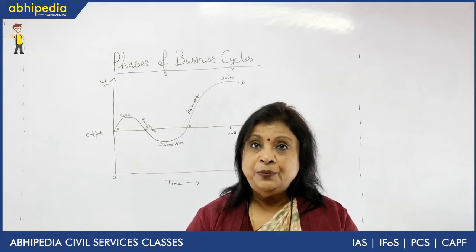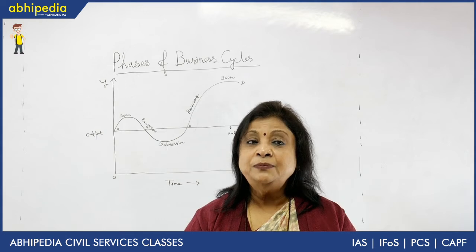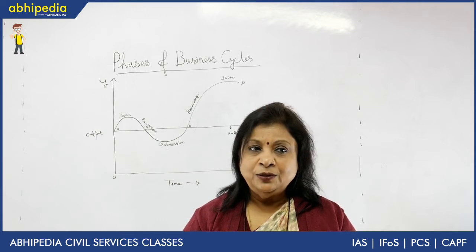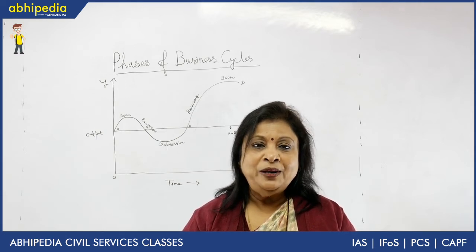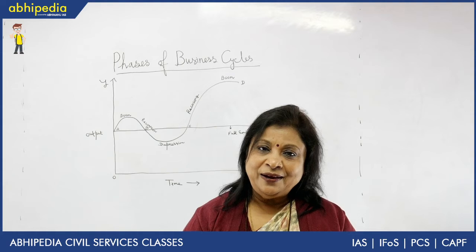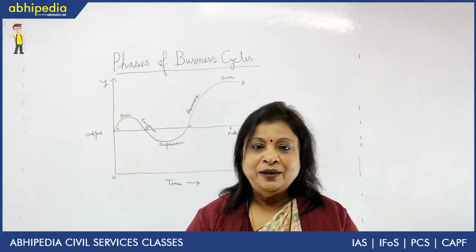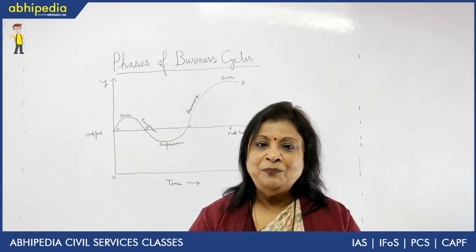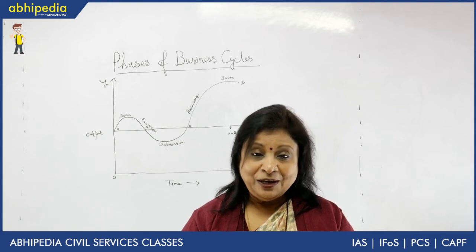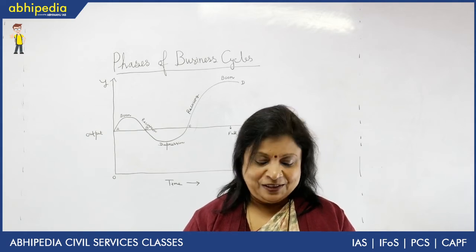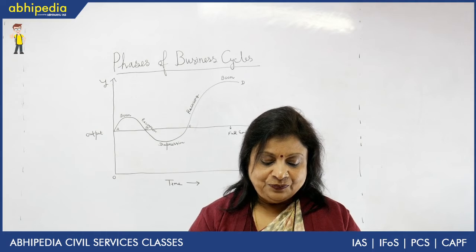During depression, the rate of progressive tax becomes less so that people are left with more money. More money means more aggregate demand, which naturally leads to more income, more output, more employment, and more investment.